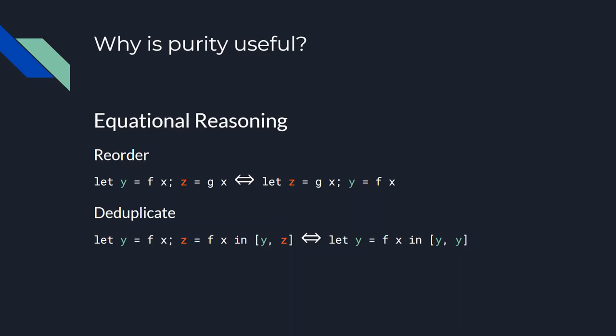When we lose referential transparency, we also lose a lot of equational reasoning capability. Equational reasoning is really one of the most powerful tools we have to understand what code means and how we can change it safely within our codebase. When you do have pure functional code, you can do certain things freely. We don't need to know anything about any of these variables to know that certain equations hold in Haskell — we don't need to know whether F or G does a side effect, or anything about X. We know we can always swap the order of let-bound things and deduplicate them.